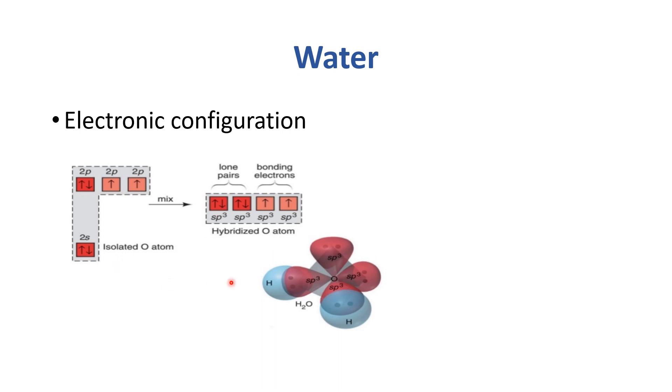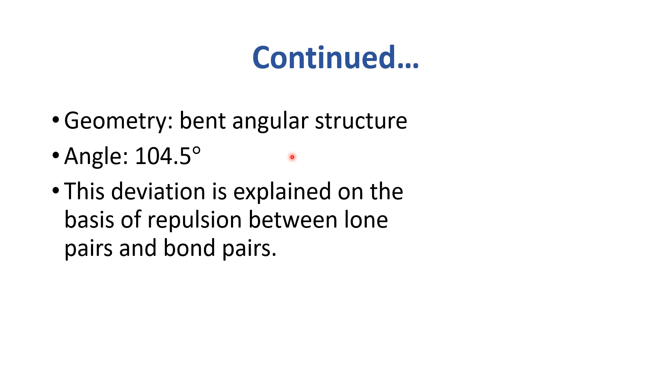For water, oxygen has four sp³ hybrid orbitals. Two are occupied by lone pairs with two electrons present in each, and two are available to bond with hydrogen. The geometry is bent or angular with an angle of 104.5 degrees. Because there are two lone pairs, they exert repulsive forces on the bond pairs, causing the bond pairs to shrink and the angle to decrease to 104.5 degrees.